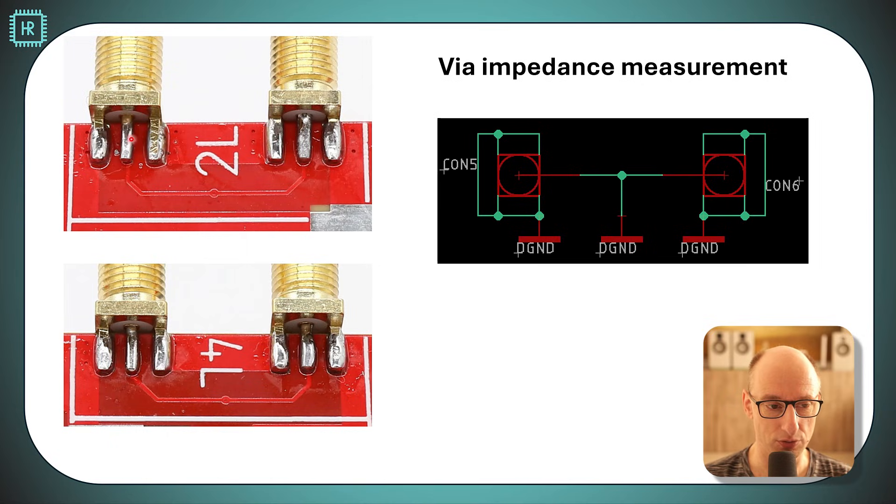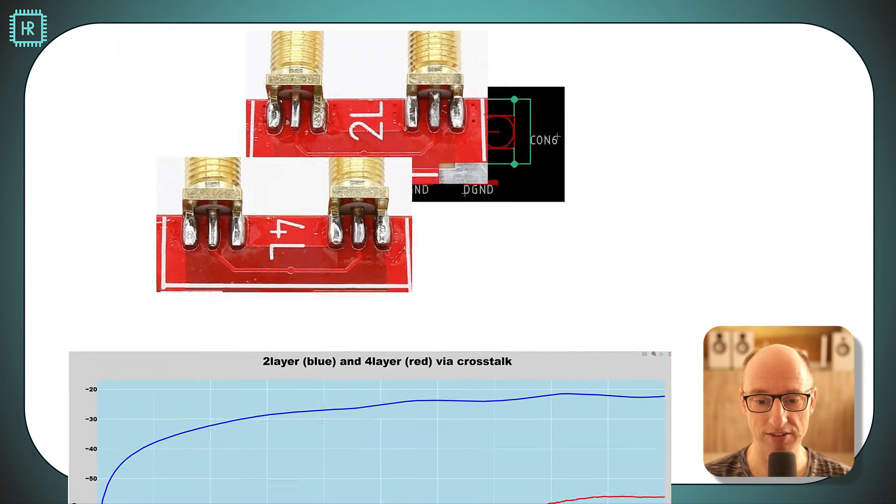Now here you can see what it looks like. You see the ground VIA here for a two layer version and here for the four layer version. On the top layer of course you cannot tell the difference between the two and four layer. However, let's see what this does in practice.